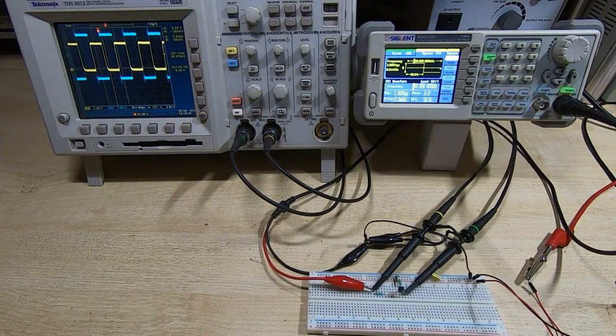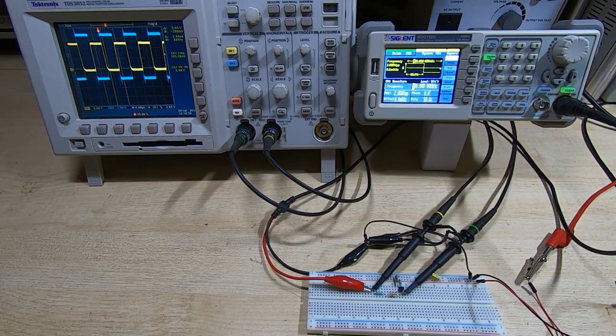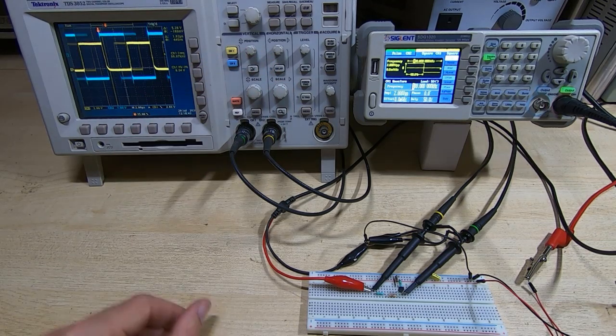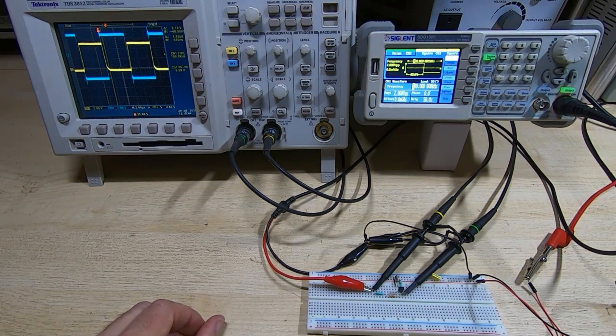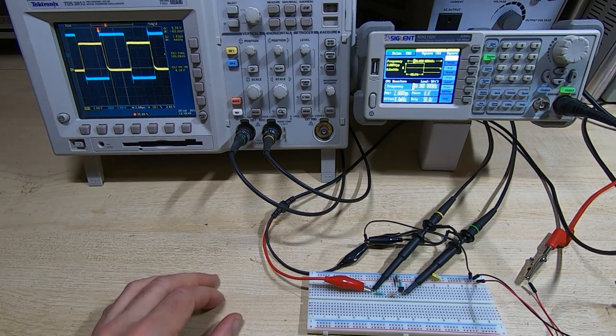At the moment it's set to 100 kilohertz, and you can see on the scope it's looking quite reasonable. The output - the yellow trace - is not too bad. We will get ringing, of course, on this test and some noise.